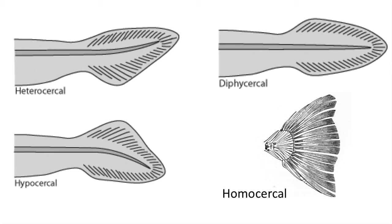If it extends into the lower lobe, we call this the hypocercal tail. Some fish have a diphycercal tail where the notochord runs along the axis of the caudal fin. Many modern fish exhibit a homocercal tail, in which the notochord or vertebral column ends with a ray of fin supports. Such a pattern is seen in goldfish, for example.